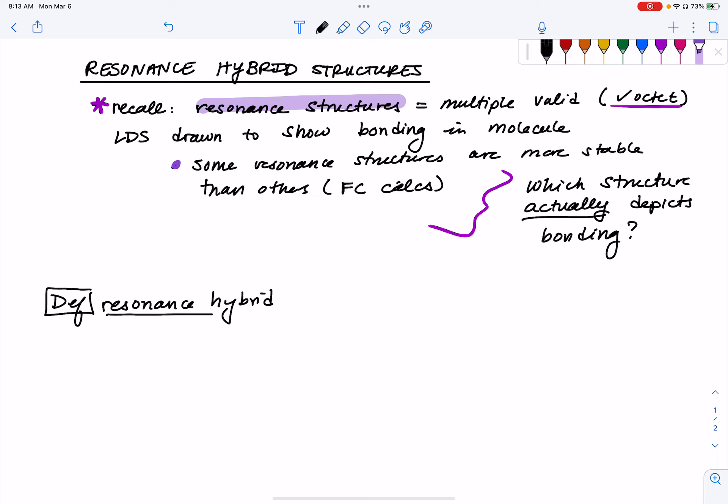So a resonance hybrid can be thought of as a combination of all possible resonance structures.